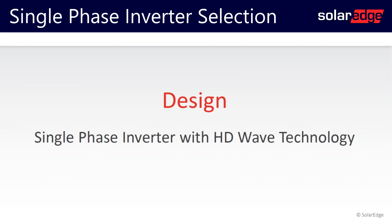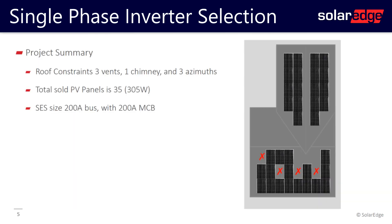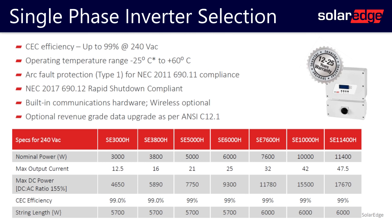So how do I select a single-phase inverter? It comes down to the maximum DC to AC ratio. Let's look at this project — we have a couple of roof constraints: three vents, a chimney, as well as three azimuths. The total PV panel wattage is 305 watts, and the service entrance is a 200-amp bus with a 200-amp main circuit breaker.